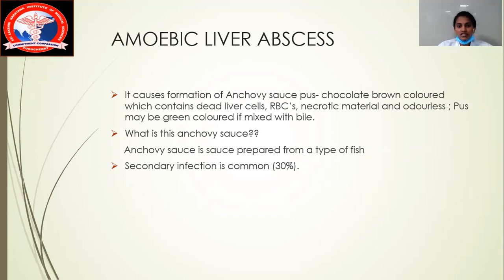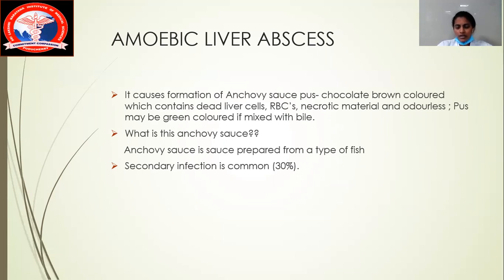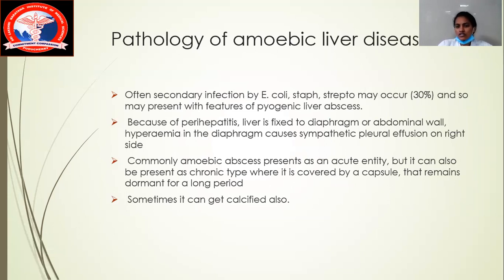Anchovy sauce pus is also known as chocolate-brown colored sauce. It contains dead liver cells, broken RBCs, and necrotic materials, and it is odorless. If the drainage appears greenish in color, that is because the anchovy sauce gets mixed with bile, giving a green color. Secondary infection occurs in 30% of patients only. The organisms causing secondary infection are E. coli, Staphylococcus, and Streptococcus, causing features of pyogenic liver abscess.